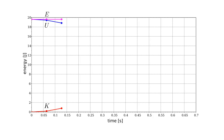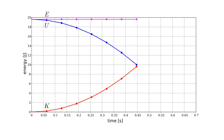As time goes on, the potential energy decreases at an ever-increasing rate, while the kinetic energy increases at an ever-increasing rate. Eventually, kinetic energy exceeds potential energy. And when the mass reaches the ground, all the energy of the system takes the form of kinetic energy. Yet the entire time the total energy of the system remains constant.